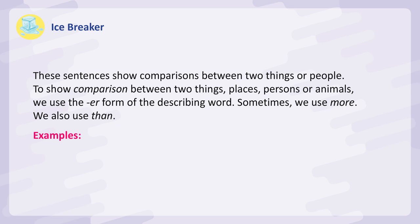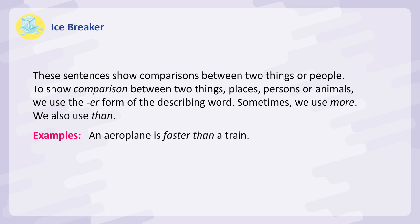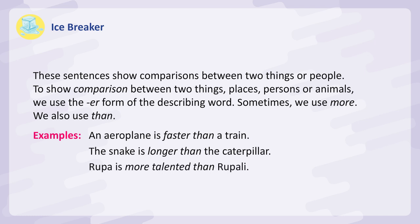Examples: An aeroplane is faster than a train. The snake is longer than the caterpillar. Rupa is more talented than Rupali.